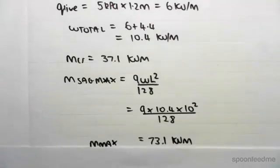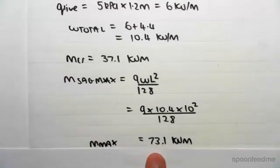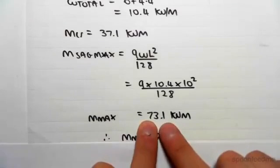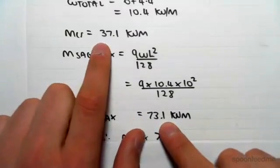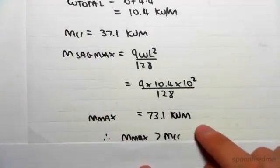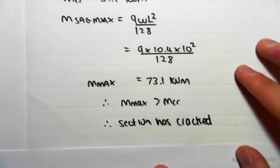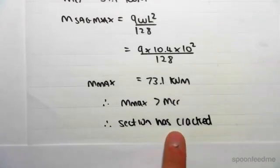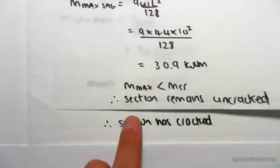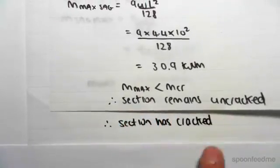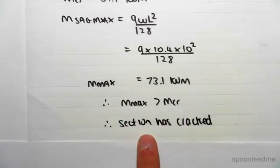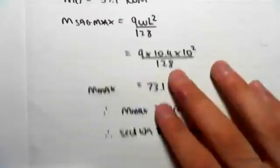In this case, now the maximum sagging is greater than the cracking moment. So what that tells us is that our beam will crack, which tells us we need to use the cracked section properties. The section is cracked, which means we need to use the cracked section properties. This is in contrast to what we did in the previous video, where the section remained uncracked. So in this video, the section has cracked, so we need to use the cracked section properties for 28 days sagging.